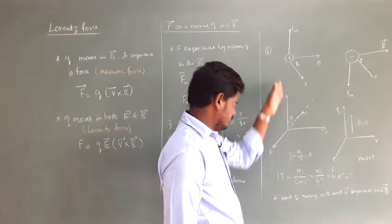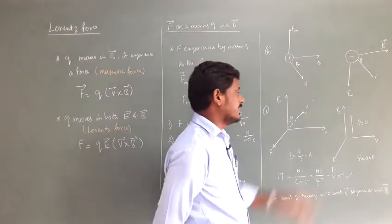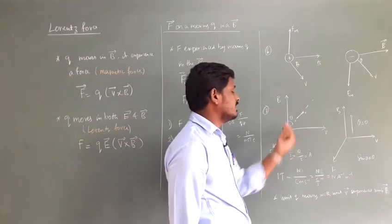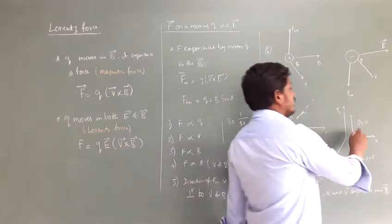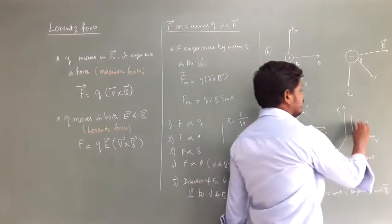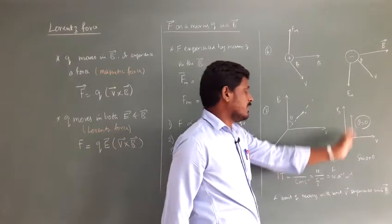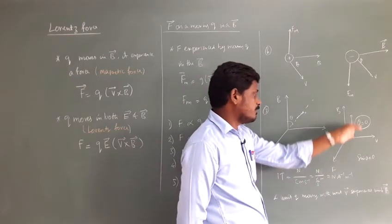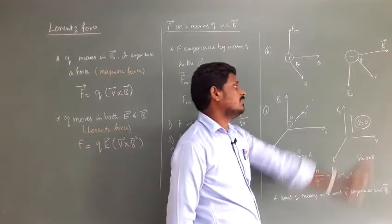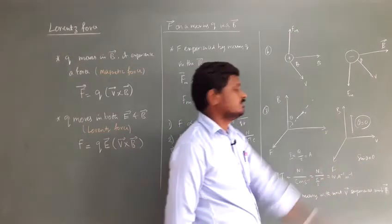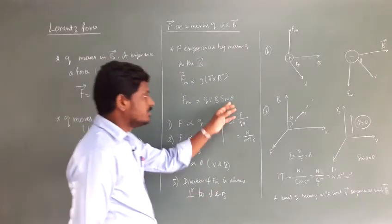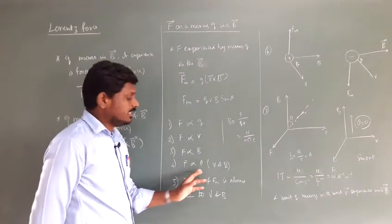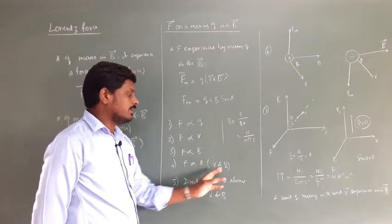Consider the magnetic field in the y direction and the particle moving at angle θ between its velocity and the magnetic field. If the particle moves parallel or anti-parallel to the magnetic field, θ = 0° or θ = 180°, and since sin 0° = 0 and sin 180° = 0, the magnetic force is zero. The force is directly proportional to sinθ, where θ is the angle between velocity and magnetic field.